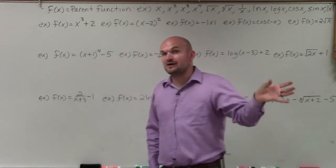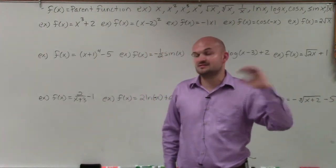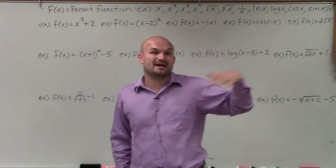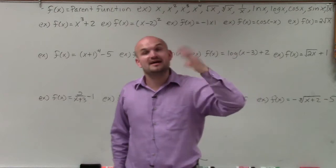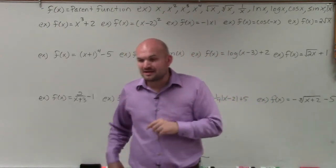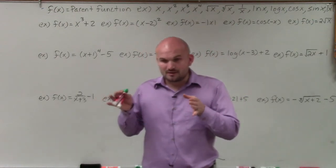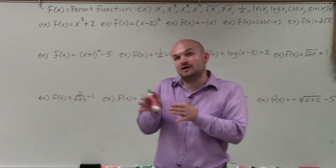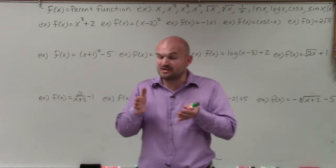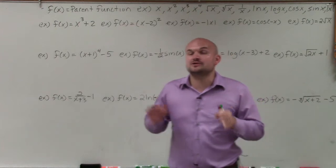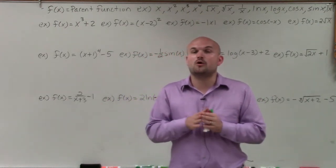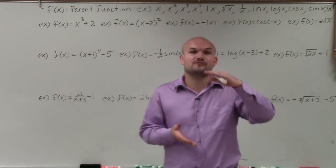If we're multiplying the function by negative 1 outside, that's a reflection of the x-axis. If we're multiplying by negative 1 on the inside, that's a reflection about the y-axis. If you're multiplying by a value whose absolute value is greater than 1, that's a vertical stretch or a horizontal compression. If the absolute value of the multiplier is less than 1, that's a horizontal stretch or a vertical compression.